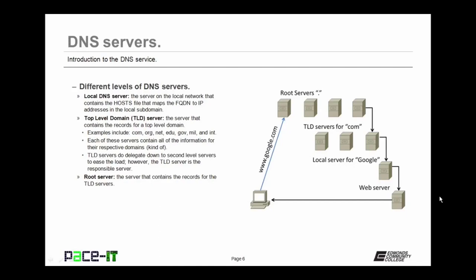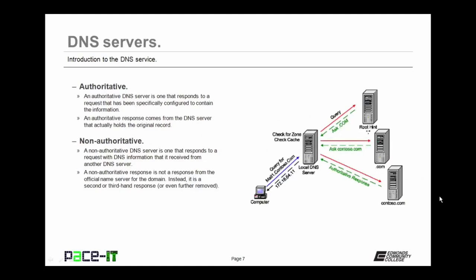But the TLD server is the server responsible for maintaining the record. Then there's the root server — the server that contains all of the records for the TLD servers. So if you're looking for a TLD that is not well-known, you will actually go to the root server, which will then pass you on to the appropriate TLD. Then there are authoritative servers and non-authoritative servers. An authoritative DNS server is one that responds to a request and has been specifically configured to contain the requested information — the response comes from the name server that actually holds the original record.